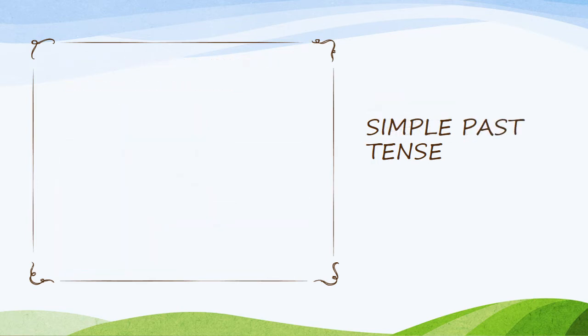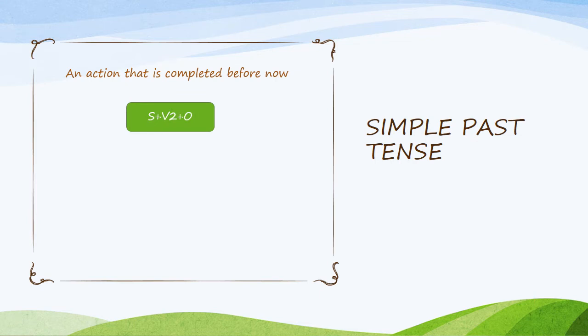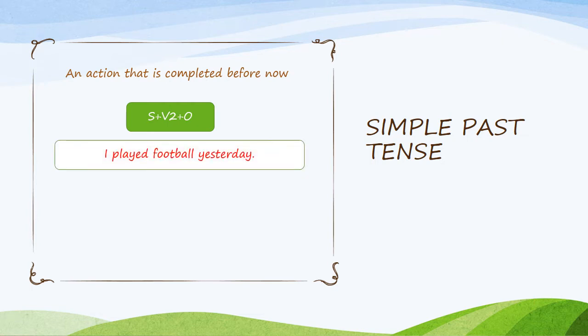Simple past tense — an action that is completed before now. The structure is: Subject plus verb second form plus object. For example: I played football yesterday — it's over. In case of present, play; in case of past, played — verb second form. Play changes to played. I played football yesterday — that is completed before now.